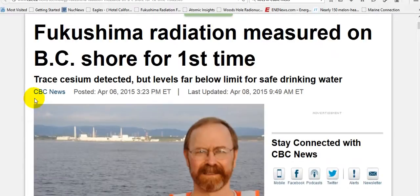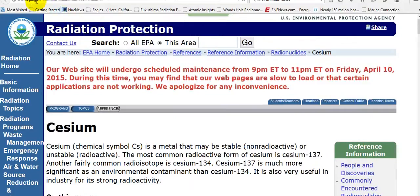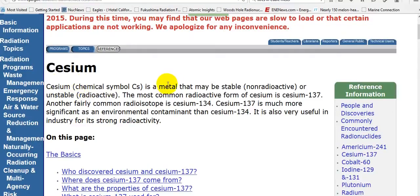Fukushima radiation was measured on BC shore for the first time. Trace cesium detected. Not cesium-137, but cesium. The U.S. EPA says cesium is a metal that may be stable, non-radioactive, or unstable, radioactive.